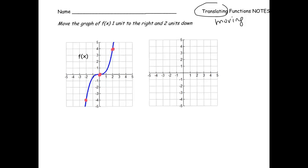Let's take the first point. Let's move it one to the right and two units down — the new point is graphed on our other set of axes. Next point: let's move that one to the right and two units down, and now that point is graphed over here as well.